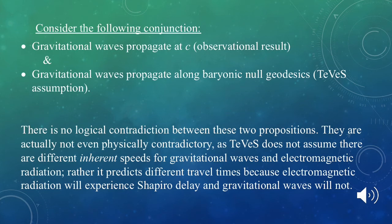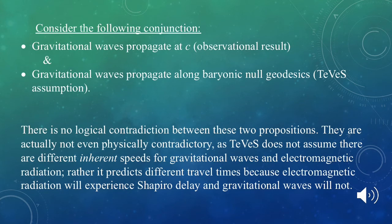Consider the following conjunction: gravitational waves propagate at c (observational result), and gravitational waves propagate along baryonic null geodesics (TeVeS assumption). Do these produce a logical contradiction? No — there is no logical contradiction here. They aren't even physically contradictory, as TeVeS doesn't assume different inherent speeds for gravitational waves and electromagnetic radiation. Rather, it predicts different travel times because EM radiation experiences Shapiro delay while gravitational waves do not. Whether they travel the same speed is not a crucial assumption of TeVeS.